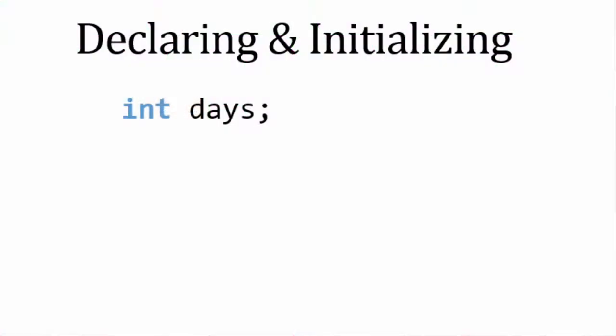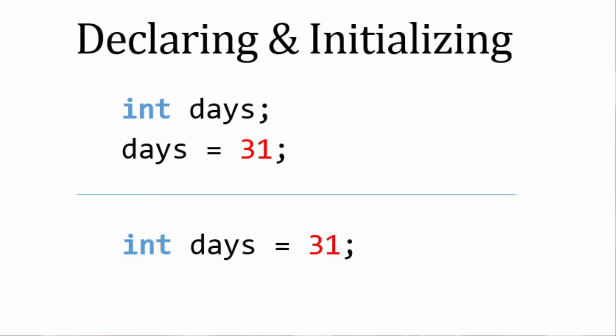If we were to declare an integer called days, we would write int days. If we wanted to assign a value of 31 to that integer, on the next line we could put days equals 31. Or we could do both at the same time like this: int days equals 31.